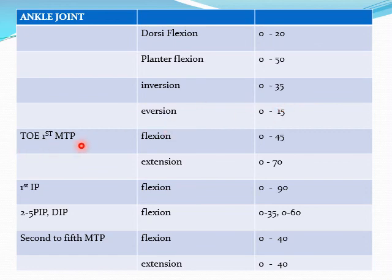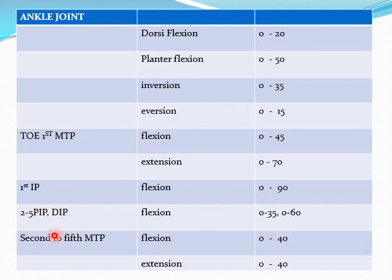For the toes: first metatarsophalangeal joint, flexion and extension. Flexion: 0 to 45 degrees. Extension: 0 to 70 degrees. For the interphalangeal joint, flexion: 0 to 90 degrees. Second to fifth: PIP and DIP flexion. PIP: 0 to 35 degrees. DIP: 0 to 60 degrees. Second to fifth metatarsophalangeal joint, flexion and extension. Flexion: 0 to 40 degrees. Extension: 0 to 40 degrees.